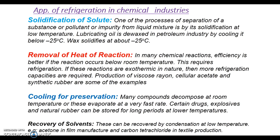Further applications of refrigeration in chemical industries include solidification of solute and removal of heat of reactions — for example, production of viscose rayon, cellular acetate, and synthetic rubber. Cooling for preservation: certain drugs, explosives, and natural rubber are to be stored for longer periods at lower temperatures, which is possible by a refrigeration system. Recovery of solvents is also an application — for example, acetone in film manufacture, and carbon tetrachloride in textile production.